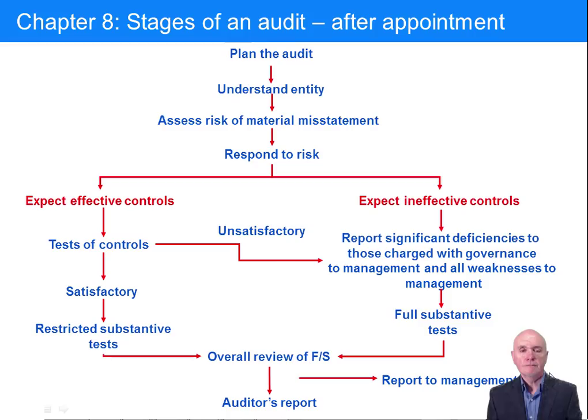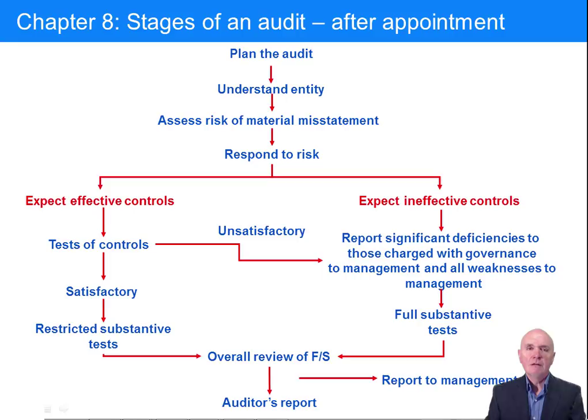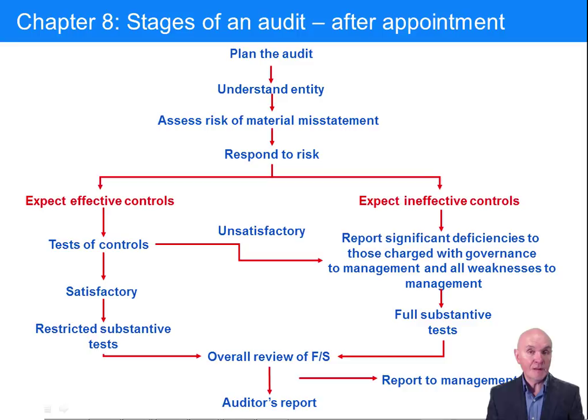This is a lecture from Open Tuition. To benefit from the lecture you should download the free lecture notes from opentuition.com. Chapter 8 looks at what happens immediately after appointment, or every year subsequent to appointment when you come to renew and do the audit again. This chapter will particularly deal with planning the audit and understanding the entity. Subsequent chapters will go on to look at risk and the various ways in which audit evidence may be collected.